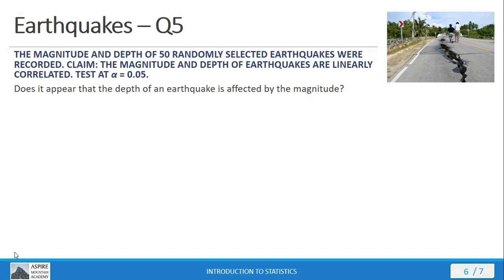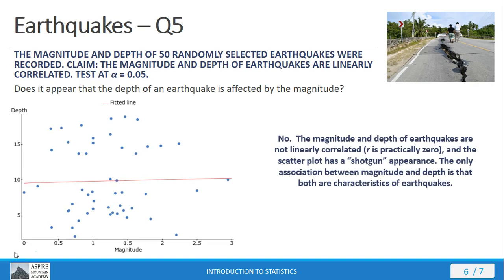Does it appear that the depth of an earthquake is affected by the magnitude? We didn't have any linear correlation, so the answer is no. Here's your scatter plot of the data — you're all over the map. This is the classic shotgun effect, where you've got very little of any correlation. That's why your r-value is so low — you've got data points scattered all over the field in your scatter plot. So no, it doesn't look like there's a relationship between the depth of the earthquake and the magnitude.